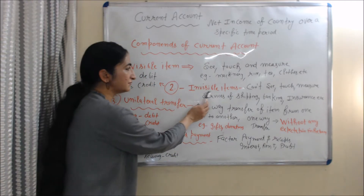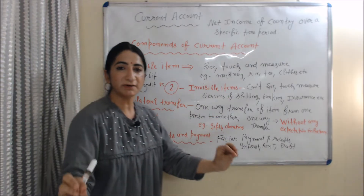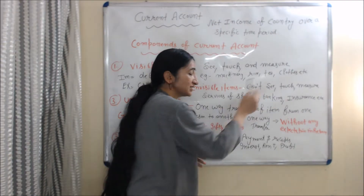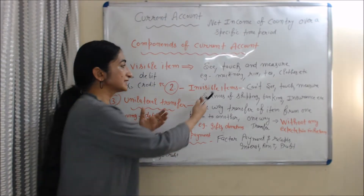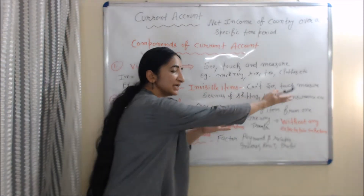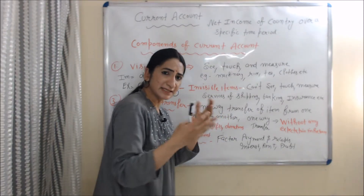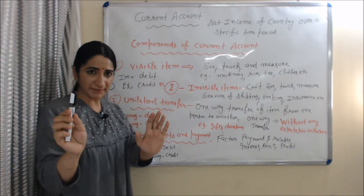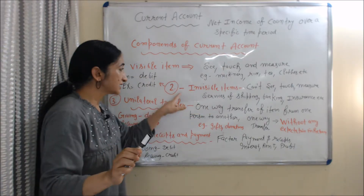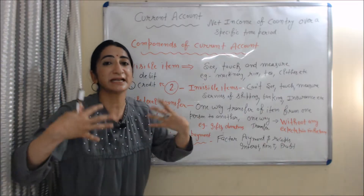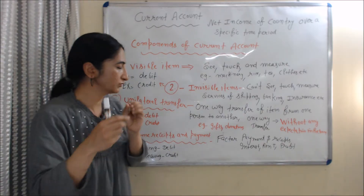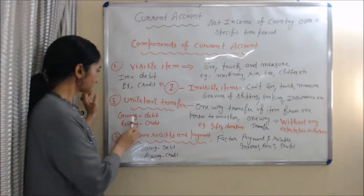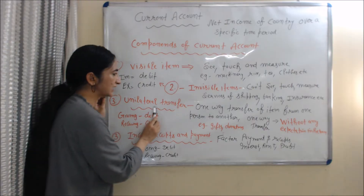The second component is invisible items. Invisible items are those items which we cannot see, touch and measure. For example, services of shipping, banking and insurance, where money is coming into our country.